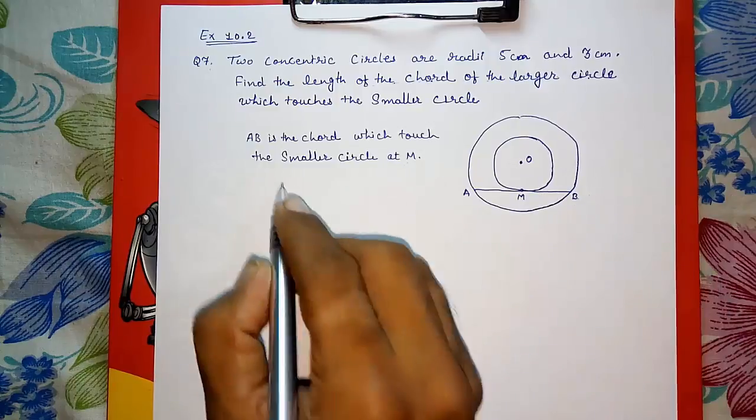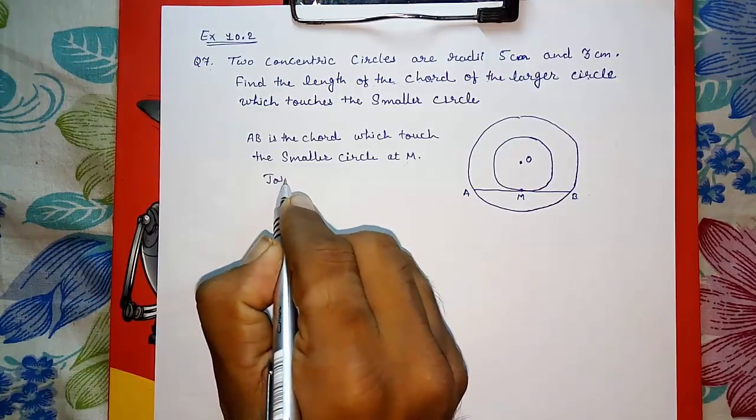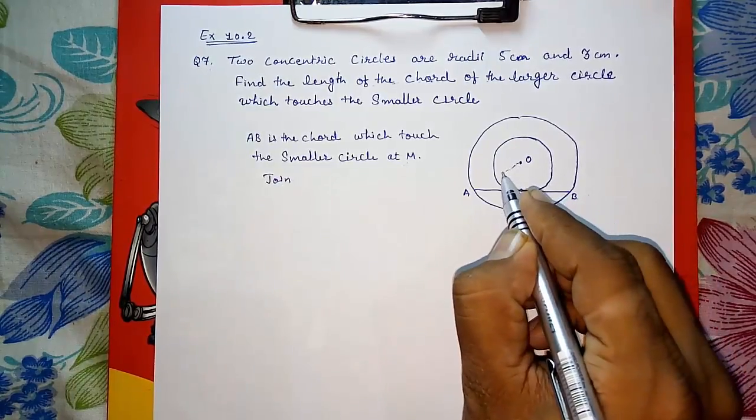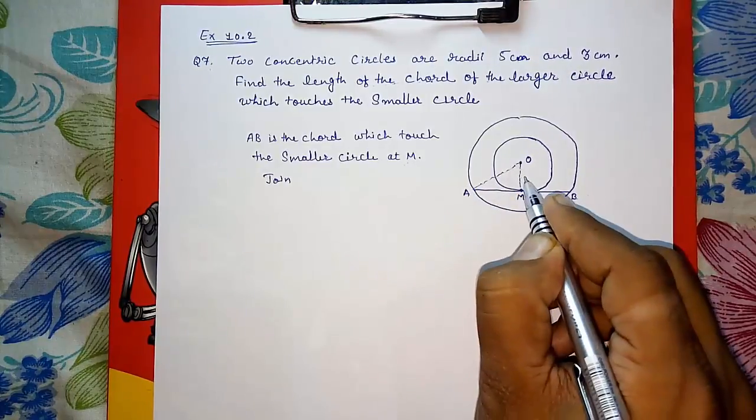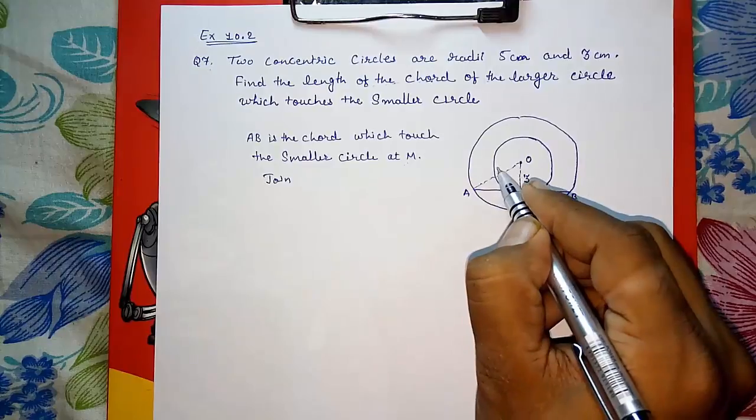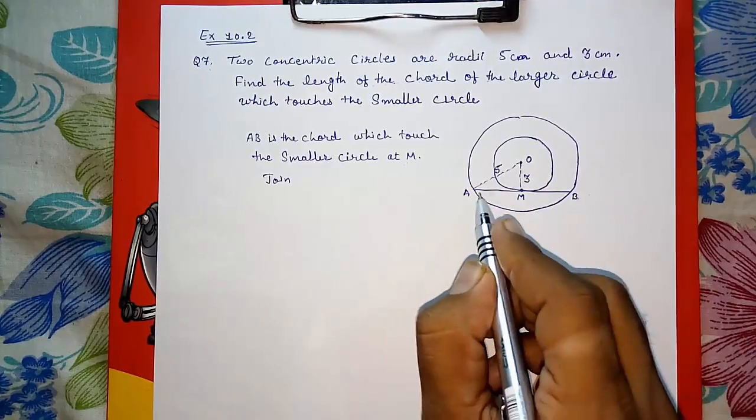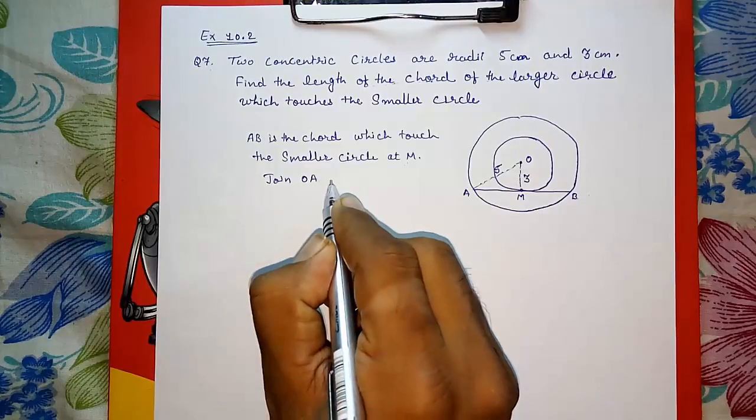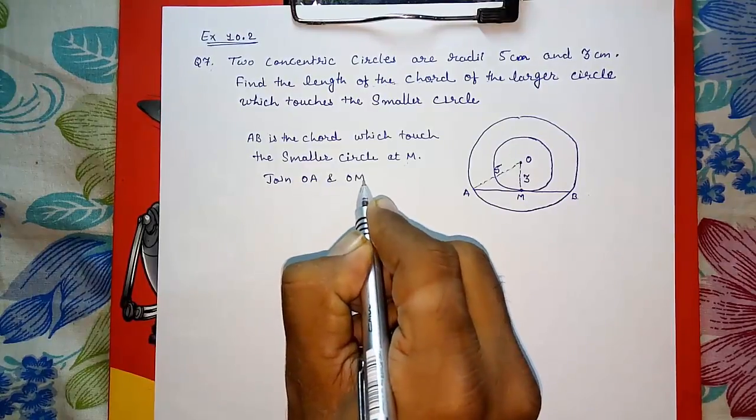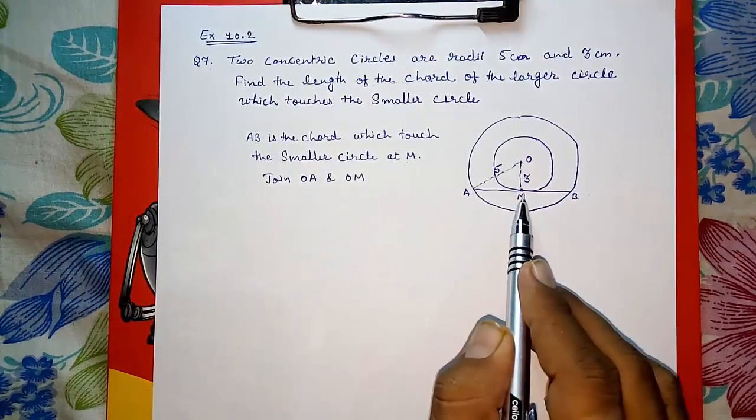So first, join OA and OM. We know these are the two radii - this is 3 centimeters and the bigger radius is 5 centimeters. Can we find AM? Yes, join OA and now we can find AM with the help of Pythagoras.